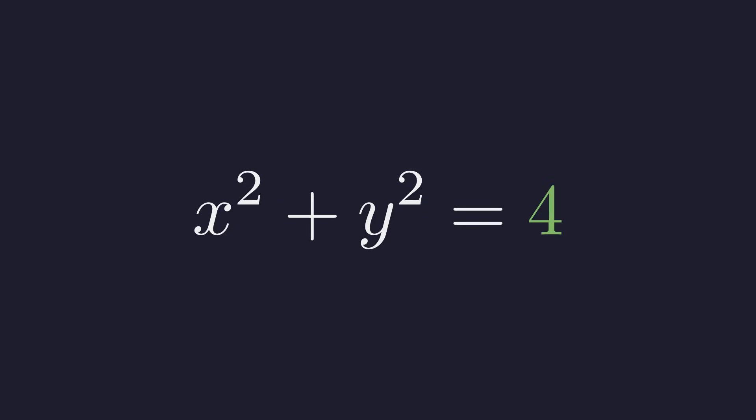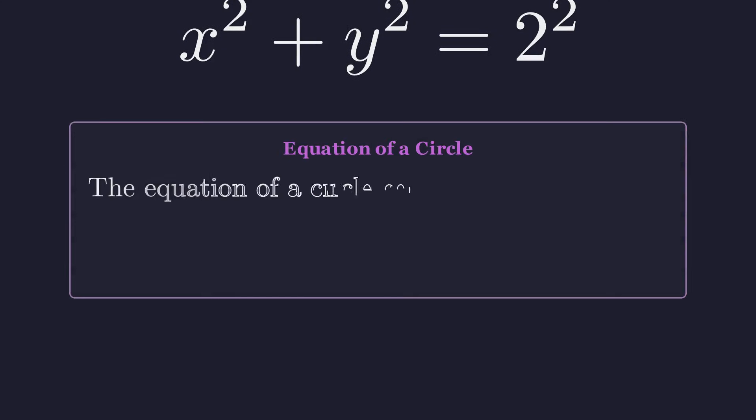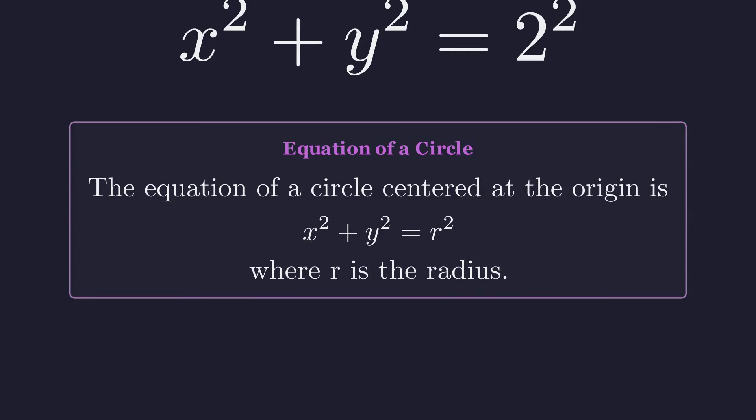Notice 4 here can be written as 2 squared. x squared plus y squared equals 2 squared. And you might recognize this as the equation of a circle centered at the origin, where r is the radius. So we're looking at a circle with radius 2.